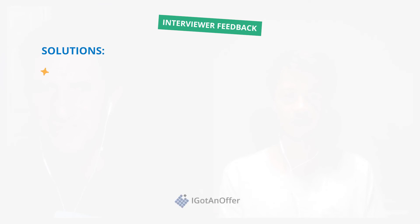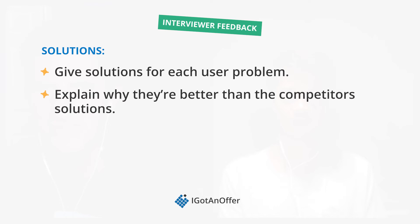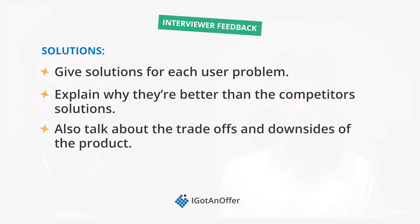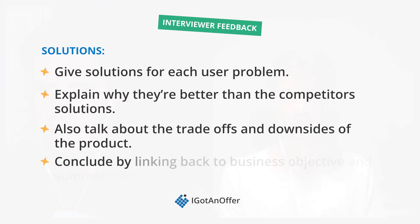For each of the user problems you've identified, you should explain the product solutions and why they're better than the competitor's solutions. As Mark did here, you can also identify trade-offs — go over the potential downsides of the design and features of the product and how that plays against the advantages. Finally, to conclude, you can link back to the business objective again and give a brief summary of your answer.